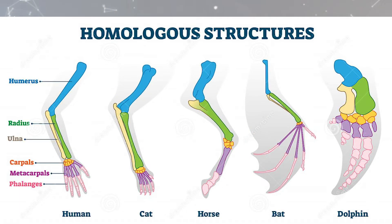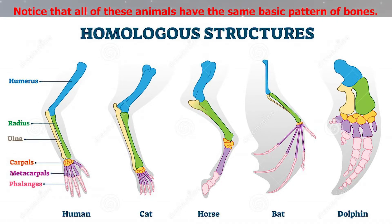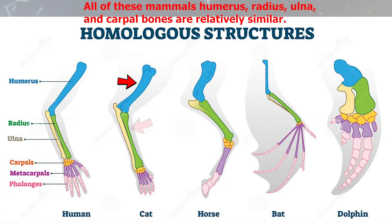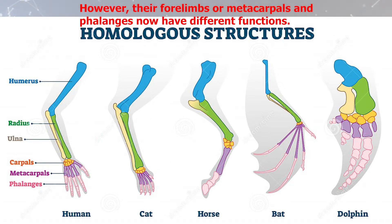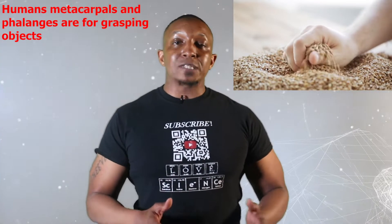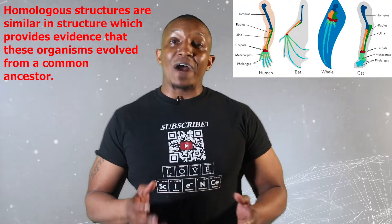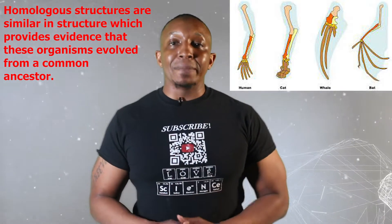Look at the following diagram. It shows the hands of several different mammals. Notice that they all have the same basic pattern of bones — they inherited this pattern from a common ancestor. All of these mammals' humerus, radius, ulna, and carpal bones are relatively similar. However, their forelimbs or metacarpals and phalanges now have different functions. Humans' metacarpals and phalanges are for grasping objects. Cats and horses are for walking and running. Bats are for flying. Dolphins are for swimming. To sum it up, homologous structures are similar in structure, which provides evidence that these organisms evolved from a common ancestor, but these structures are often different in function.